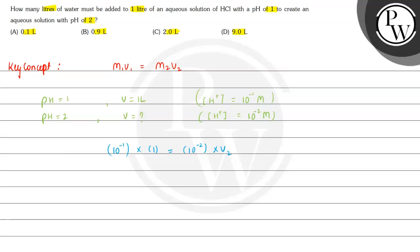So in this case, V2 will be equal to 10 to the power minus 1 divided by 10 to the power minus 2. That is equal to 0.1 liter. So if you see the option, it's option A.